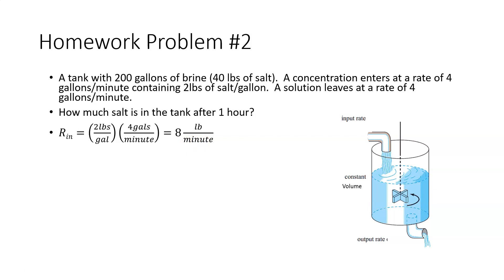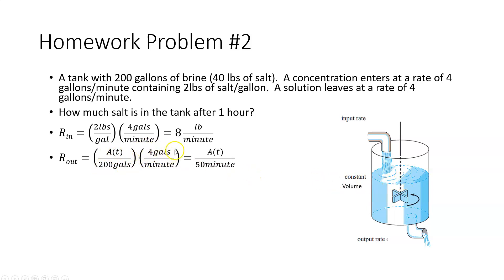So what's coming out? We call this a variable A at any time T, so we've got A over 200 gallons. That's the salt that's going out, and it's got a rate of four gallons per minute. The gallons cancel — you've got four over 200, which comes to one-fiftieth — so you've got some amount of salt leaving every minute. This is a function we know that's going to be constantly changing.